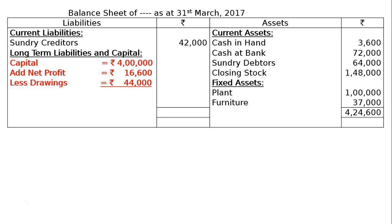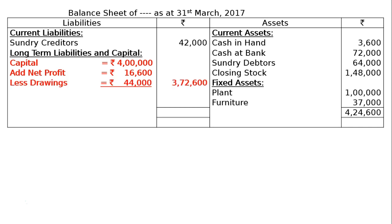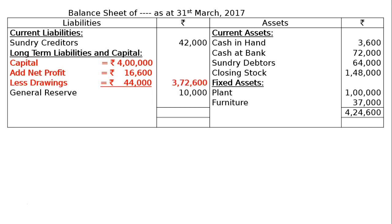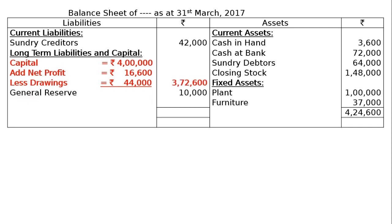Then less drawings of rupees 44,000, giving a final capital figure of rupees 3,72,600 in the final column. After that, we write general reserve, which is undistributed profit or saved profit, at rupees 10,000.